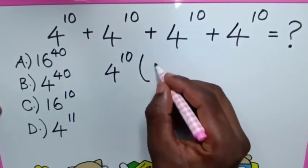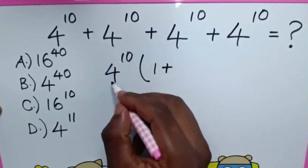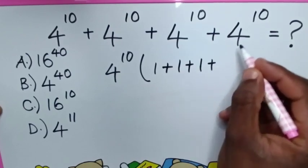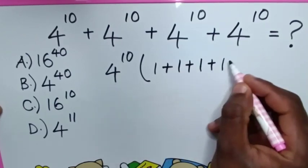Then 4 power of 10 divided by 4 power of 10 is 1, plus this divided by this is 1, plus this divided by this is 1, plus this divided by this is 1 in brackets.